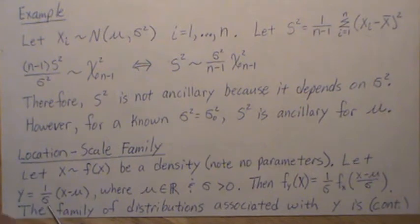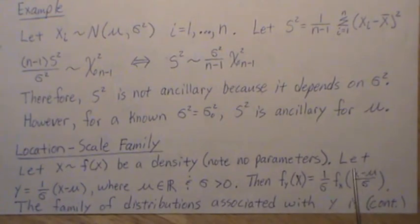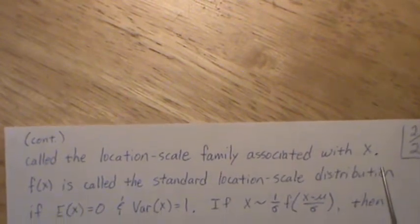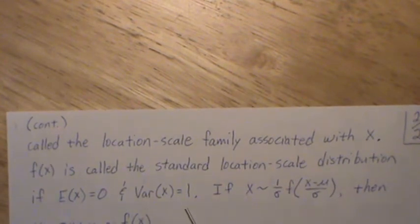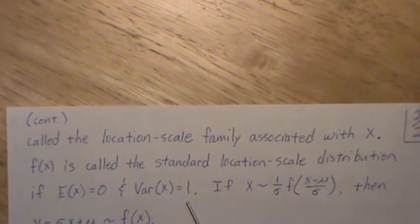So let Y equal X minus mu divided by sigma, where mu is a real number and sigma is a positive value. Then the density of Y, which is this, it can be written like this. The family of distributions associated with Y is called the location scale family associated with X. Now, F of X is called the standard location scale distribution if the mean is 0 and the variance is 1. So we have the normal distribution and we have the standard normal distribution. So the standard normal distribution has no parameters and the mean is 0 and the variance is 1.